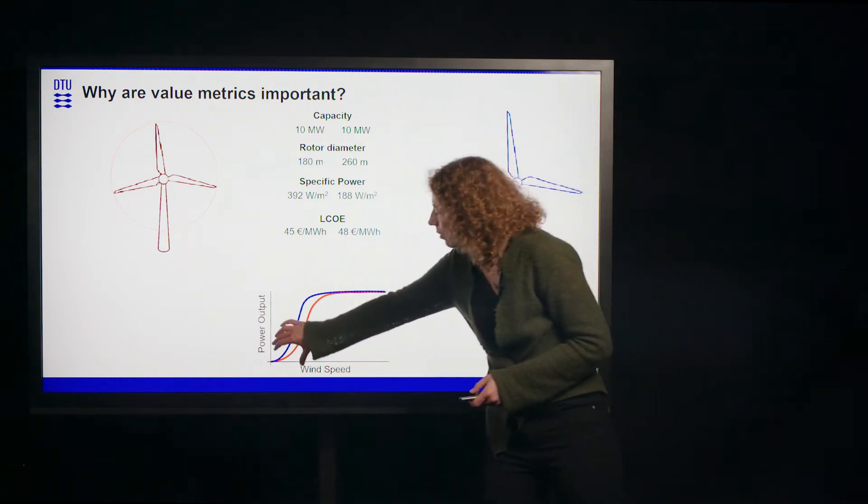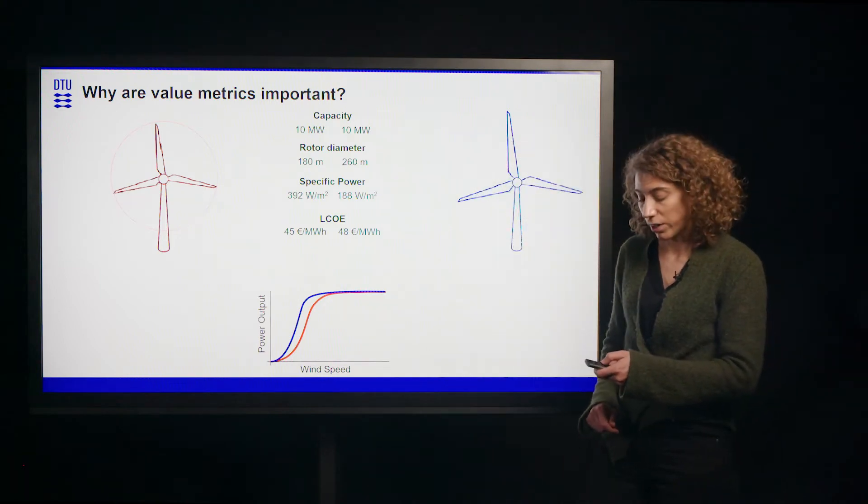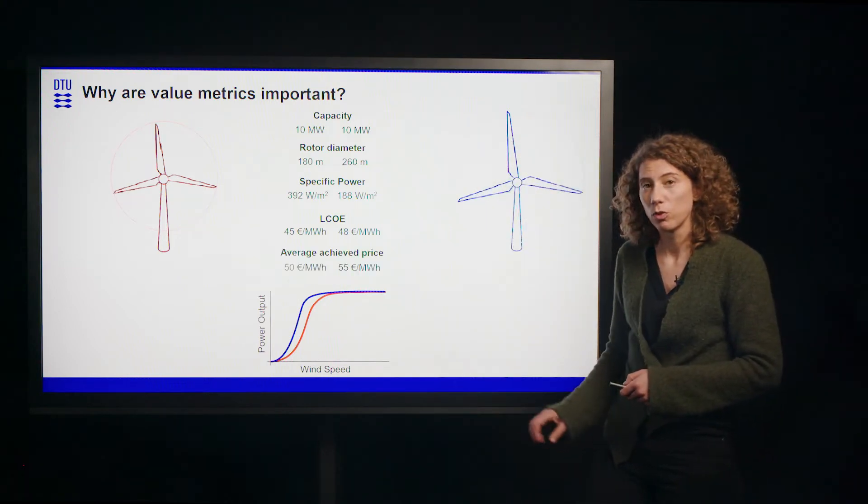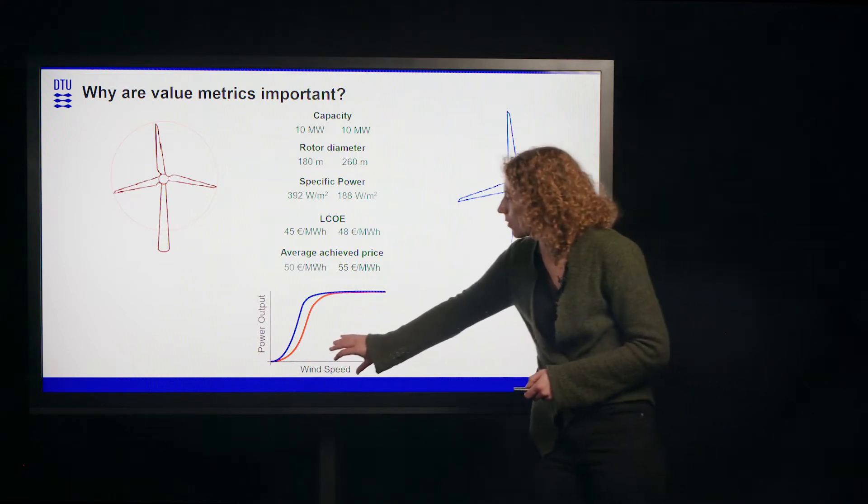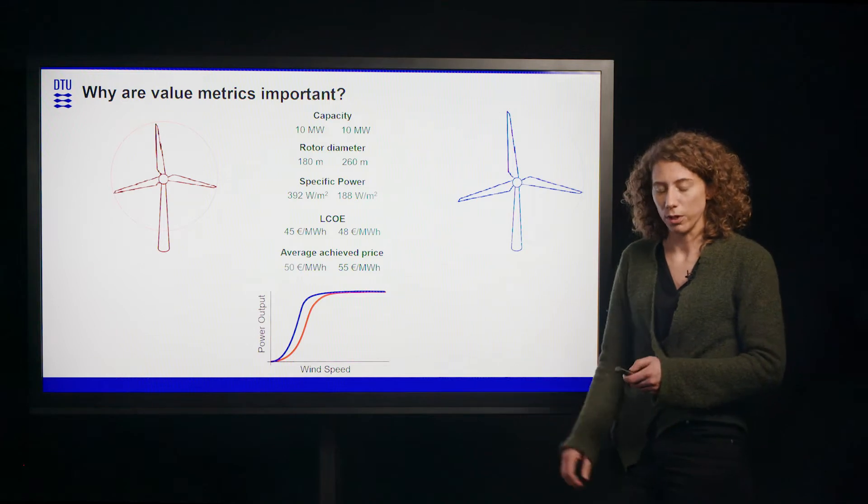Whereas in these lower wind speed areas, the market prices are high. So on average, it can be assumed that the blue turbine has an average higher achieved price than the red wind turbine.